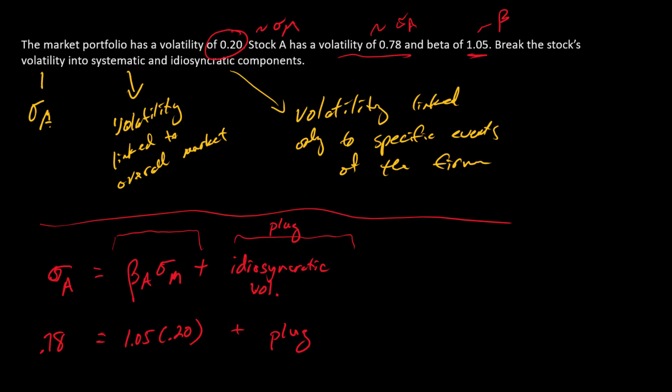So starting out here, so this is 0.21. 0.21 is systematic.